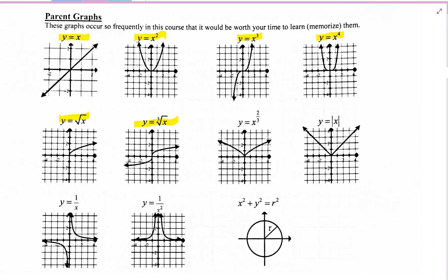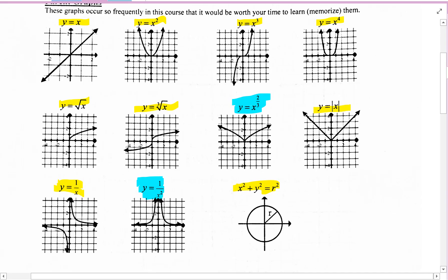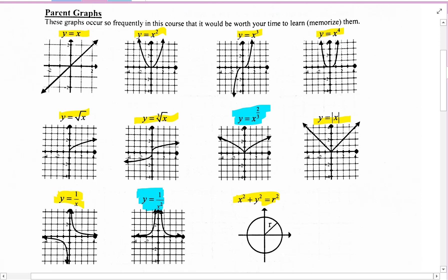This next one, we have not explored before. y equals x to the two-thirds. y equals absolute value x, y equals one over x, and I'm not sure we've really looked into this one. y equals one over x squared, and x squared plus y squared equals r squared. So you have most of them just to review.